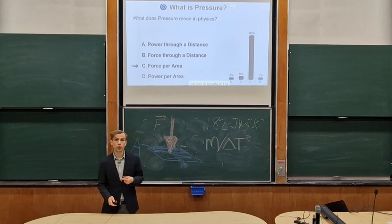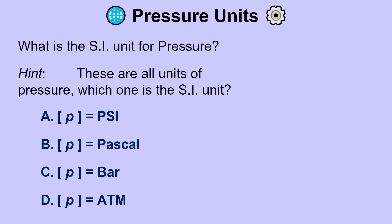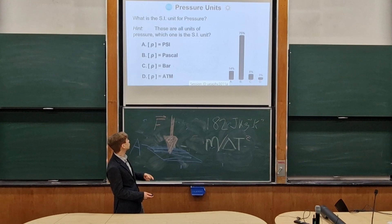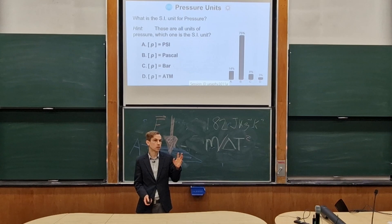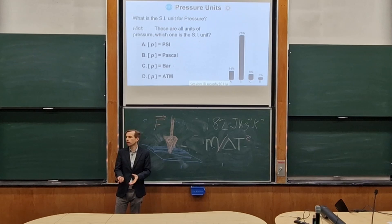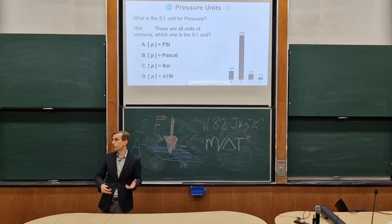After that introduction, it's no surprise we're going to think about the units for pressure. Which one of these is the SI unit for pressure? These are all units of pressure, but only one is the SI unit. Most people are going for B. Option A — psi — stands for pounds per square inch: a pound of force per square inch, a force per area, but not SI units. Most people correctly got it: the SI unit for pressure is the pascal.